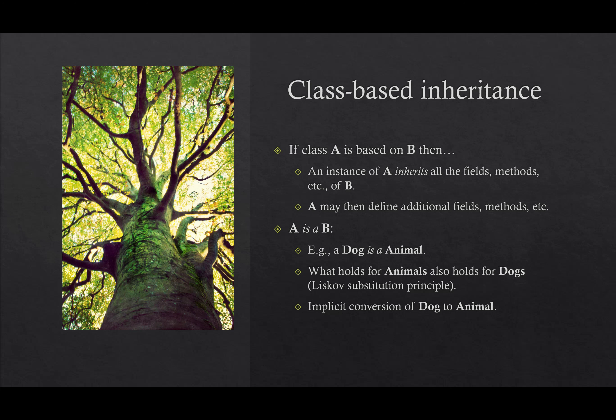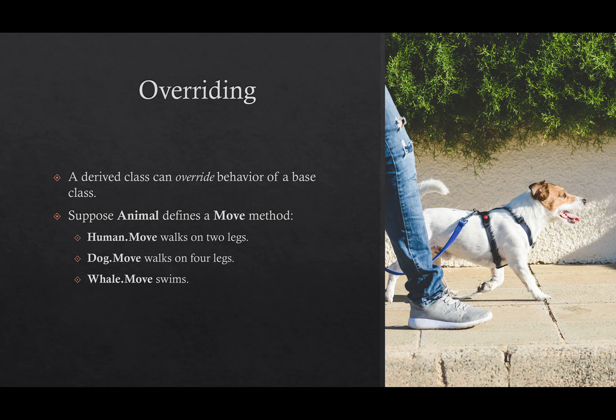To allow for that in C#, you can implicitly convert a reference to a derived type to its base type. So if you have a method that has a parameter of type animal, you can pass an object of type dog to that method, because a dog is an animal. A reference to a dog can be implicitly converted to a reference to animal. A derived type inherits all the methods of its base type, but a derived type can also override the behavior of the base class. For example, if the base class animal defines a move method, derived classes like human, dog, and whale can each override that move method to provide their own behavior.